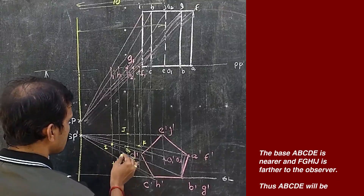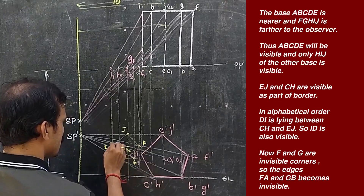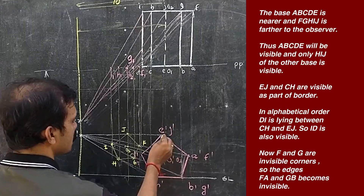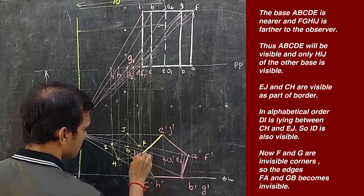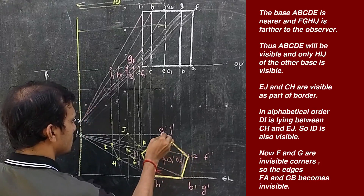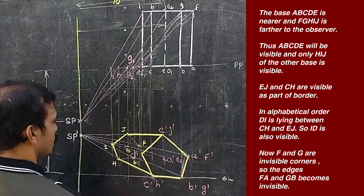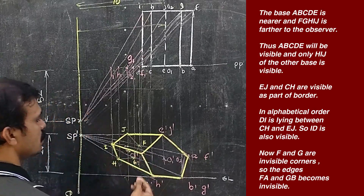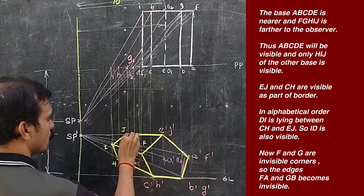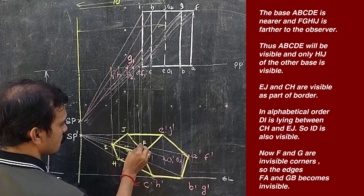Now connect I-J, J-F, F-G, G-H, and H-I with a 2H pencil — a lighter pencil. Now we can see the borders of the perspective view. Connect the visible edges. This side and these edges are visible. Now the invisible edges — this will be invisible, this will be invisible, and this will be invisible.